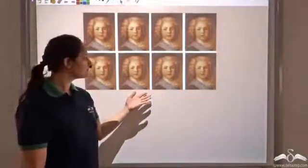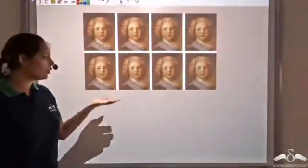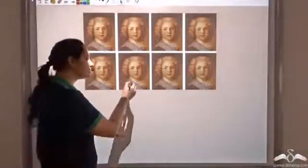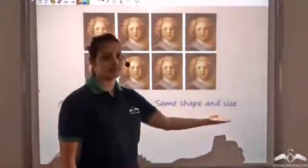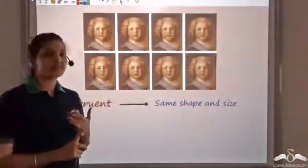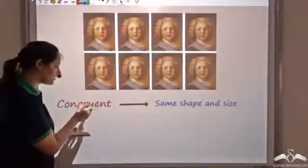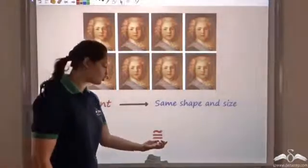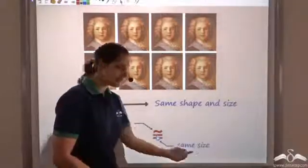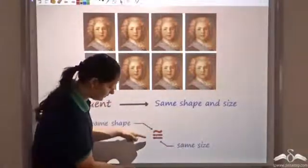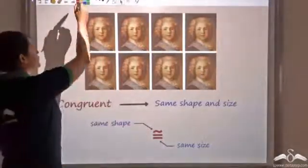Observe these pictures. You can see that each picture looks exactly the same as the other — in geometry we use the term congruent — in the sense that it has the same shape and size. So if two figures have the same shape and size, I can say that they are congruent. The symbol for congruent has two lines at the bottom showing same size, and an inverted S showing same shape. Same shape and size gives congruent.